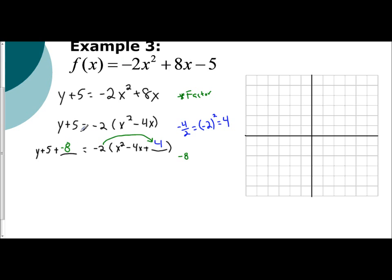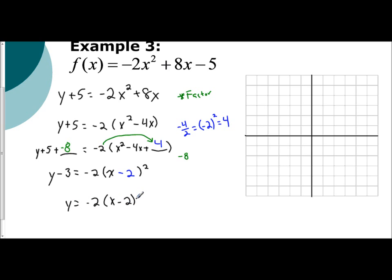So we have y minus 3 when we combine like terms on the left, equals negative 2 times the quantity x minus 2 squared — because we squared negative 2. To finish off general form, y needs to be by itself. So y equals negative 2 times the quantity x minus 2 squared plus 3. And this is our general form.